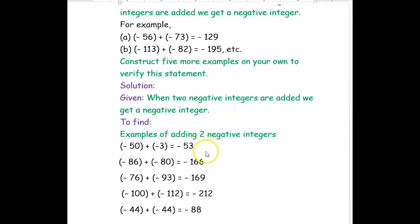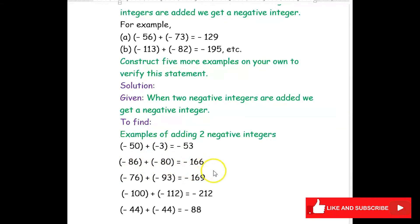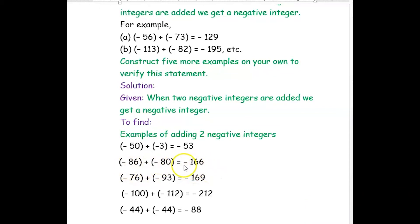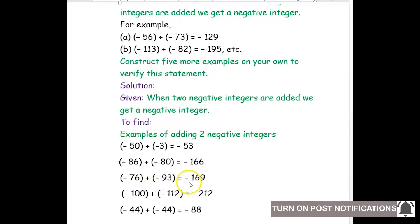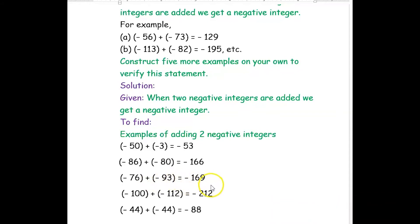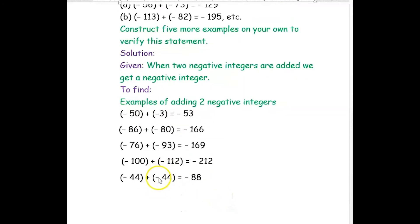Next, negative 86 added with negative 80 gives negative 166. Then negative 76 plus negative 93 gives negative 169. Negative 100 added with negative 112 gives negative 212. And negative 44 added with negative 44 gives negative 88. We can conclude that when two negative numbers are added, the result is also a negative number.